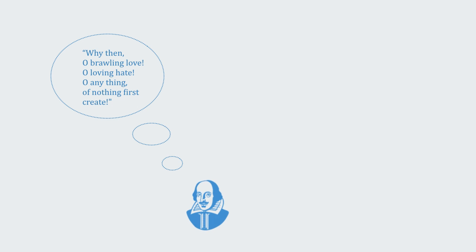Why then, O brawling love, O loving hate, O anything of nothing, first create? This short quote from Shakespeare asks probably the oldest and most fundamental question there is to ask. Why and how do we get something instead of nothing? Some form of order instead of just randomness?